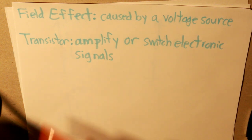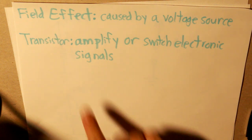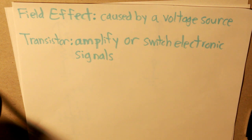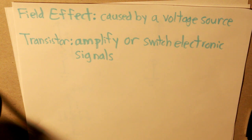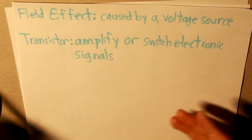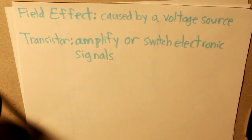A transistor, the second term, is something that amplifies or switches electronic signals, such as not only signals, but also current in this case. So combining the field effect definition and the transistor definition together, we now know what a MOSFET is, and that it is something that can amplify or switch electronic signals that is caused by a voltage source.